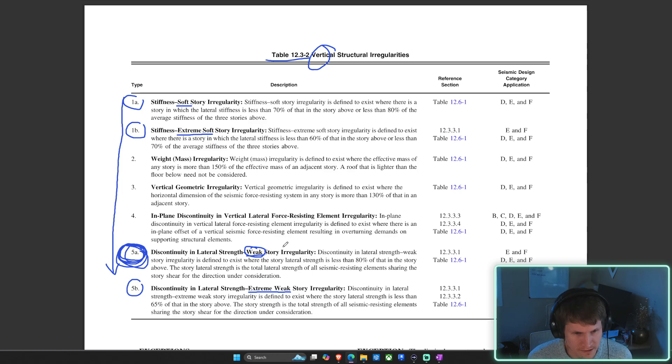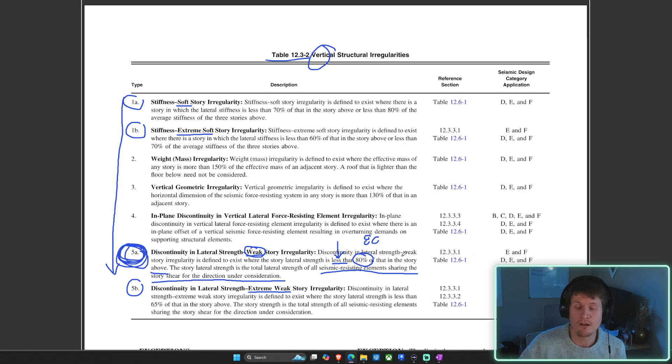Weak story irregularity is defined to exist where the story lateral strength is less than 80% of that in the story above. Keyword there: above. Doesn't matter about the story below. Big takeaway is the 80% threshold. It doesn't say less than or equal to 80%. It says less than. So if you're at 80%, you're good. You don't trigger this irregularity. If you're 79.5%, you trigger this irregularity.